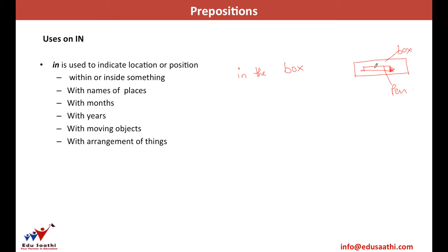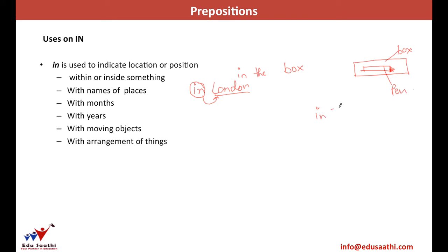'In' is also used with names of places — for example, 'I live in London.' London is the name of a place, so we use 'in.' It is also used with the names of months — for example, 'he was born in January,' because January is the name of a month.